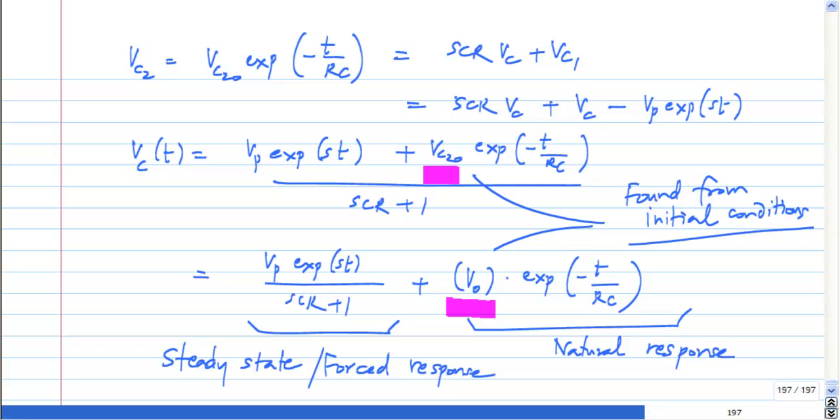The steady state response depends only on the input. That is the definition of the steady state response. Now for any stable circuit like the one we have, this natural response will die out with time and you will be left with only the steady state response. Is this fine?